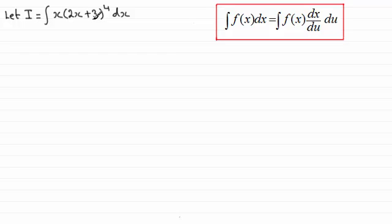Now what we're going to do is let the bracket, as I mentioned in the earlier tutorial, let the bracket equal u. So let u equal just the bracket part, that's 2x plus 3. So the next thing we do is we find out what du by dx is. So we differentiate this with respect to x and we get therefore du by dx equals 2.